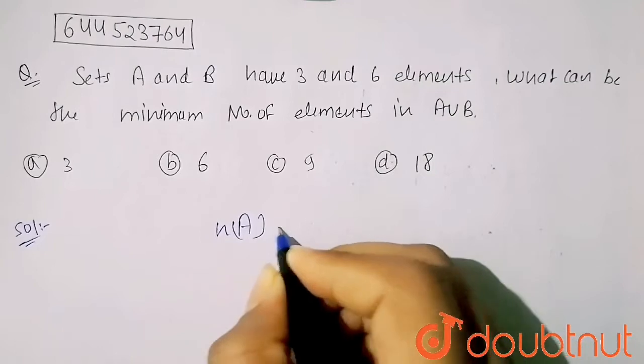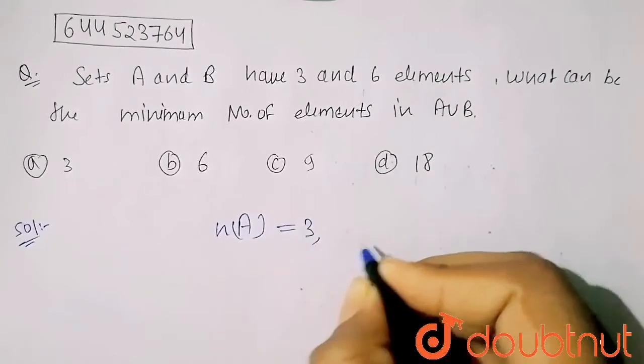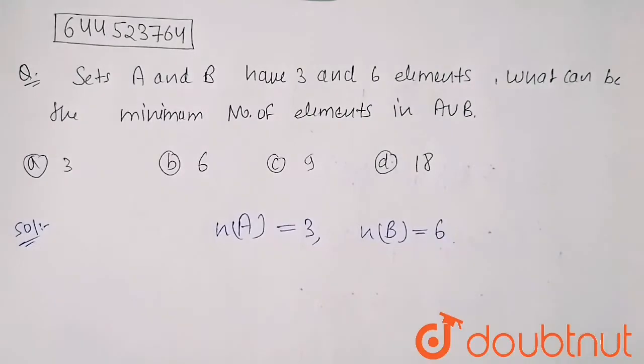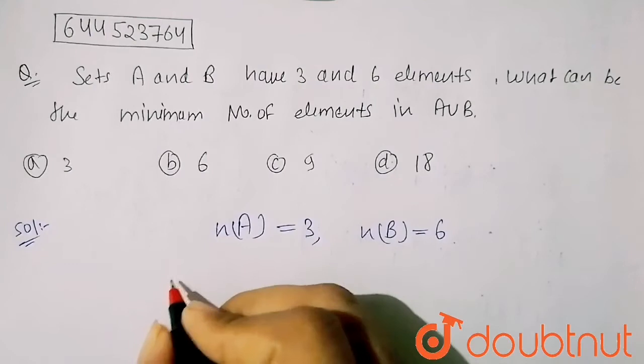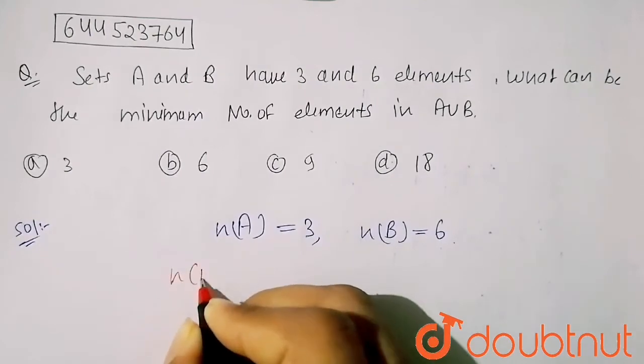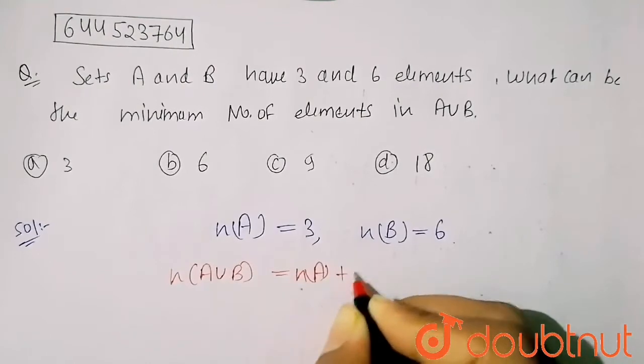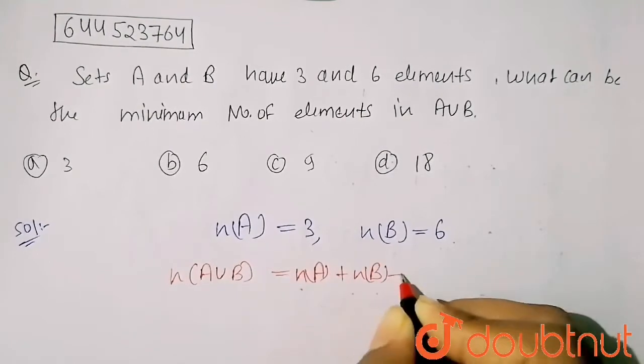In my set A, the number of elements are three. In my set B, the number of elements are six. So by the formula, n(A∪B) equals n(A) plus n(B) minus n(A∩B).